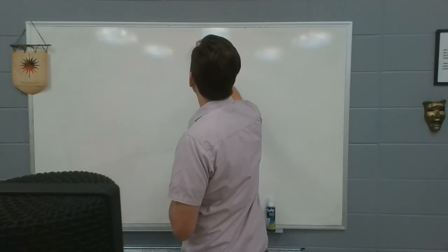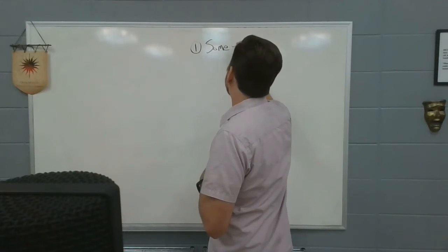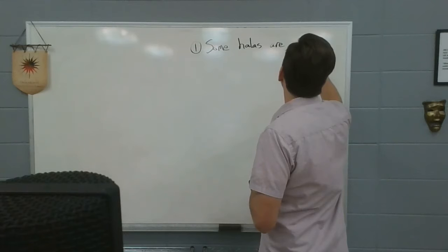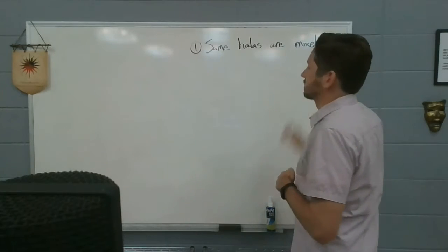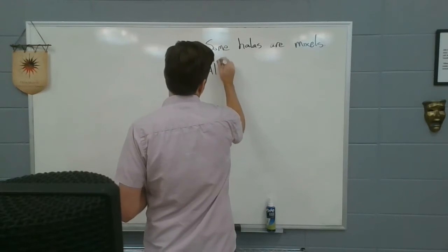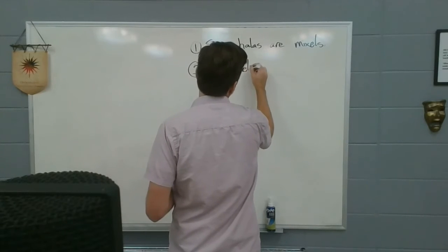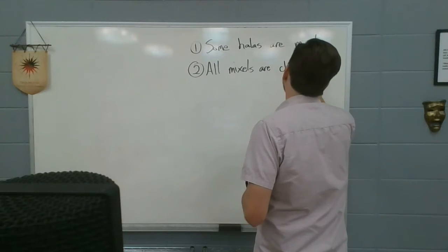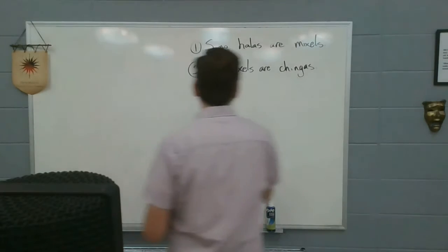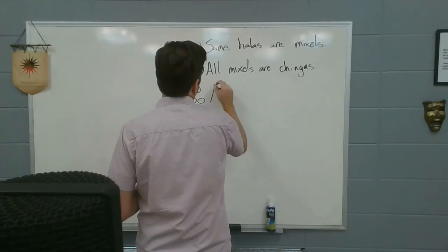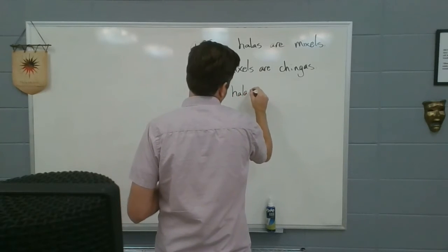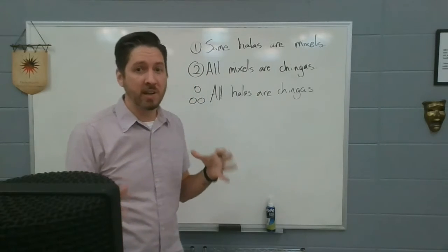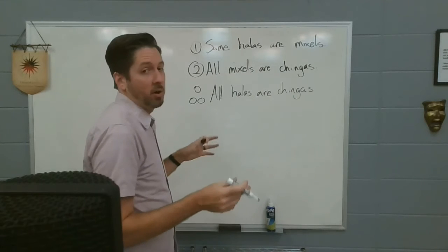So if I had one that said, let's say, first premise, here we go. Some, my four-year-old likes making up words, so we'll use some of her made-up words. Some hollas are mixels. And my second premise. All mixels are chingos. Therefore, all hollas are chingos. None of the words matter. We're just looking at categories. It's a categorical syllogism. I don't give a crap what they mean. I can still look at the logic without understanding the words.